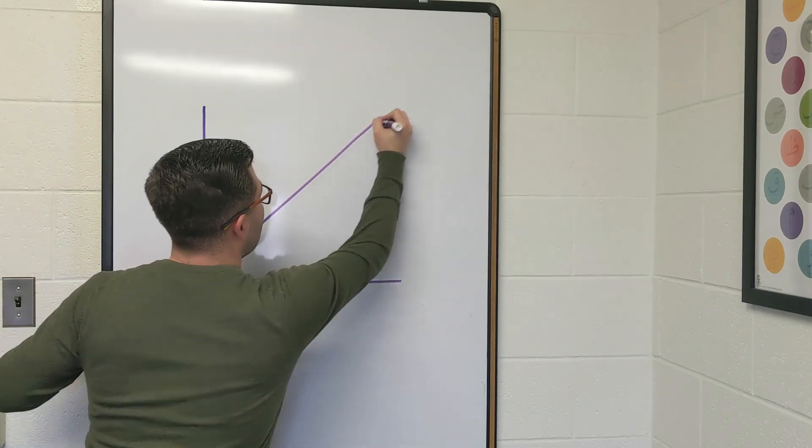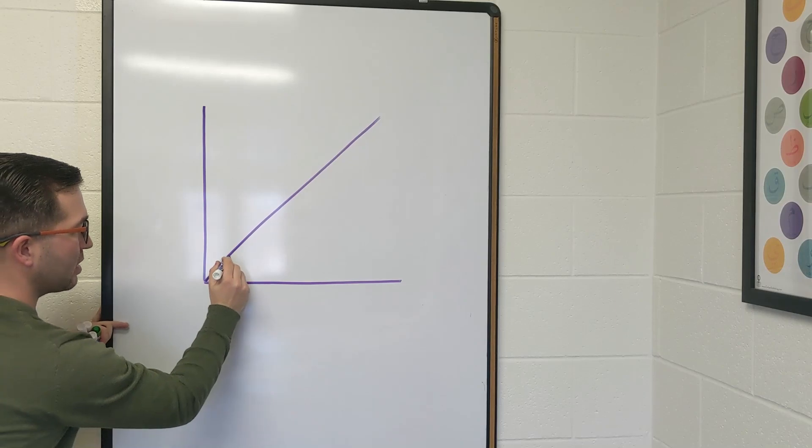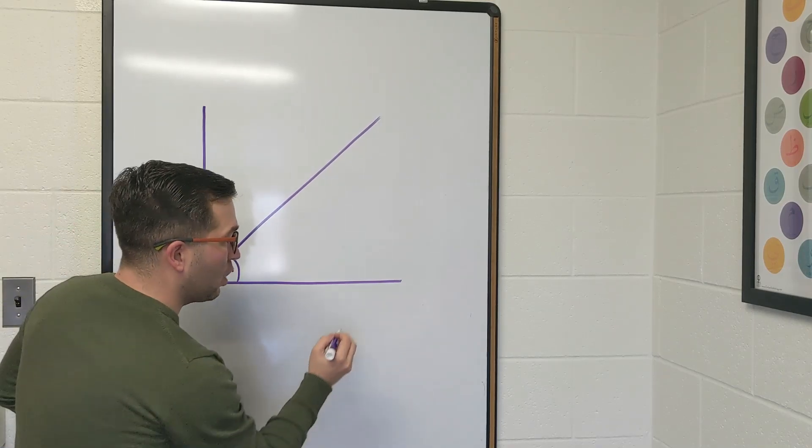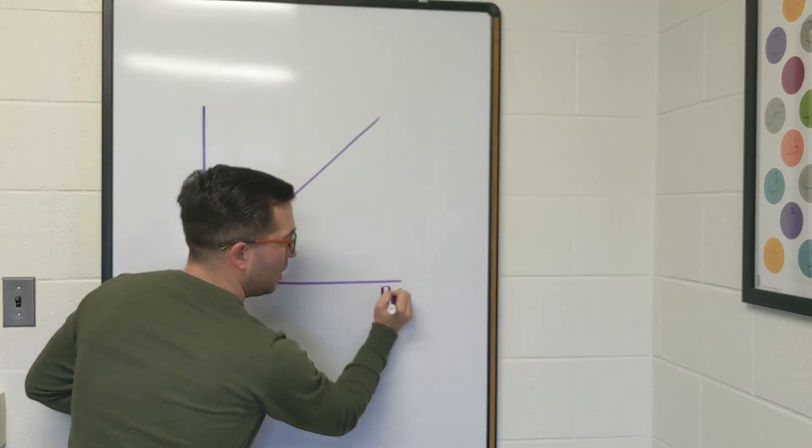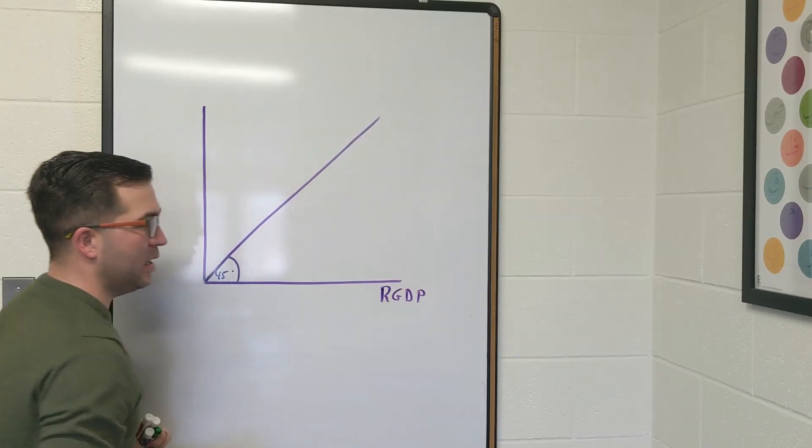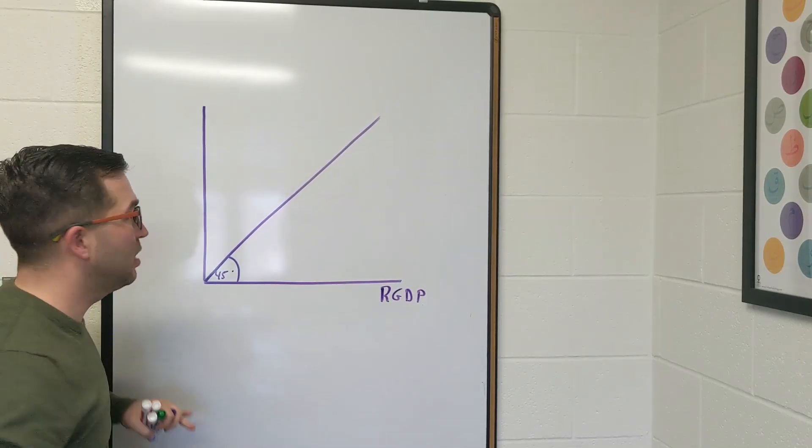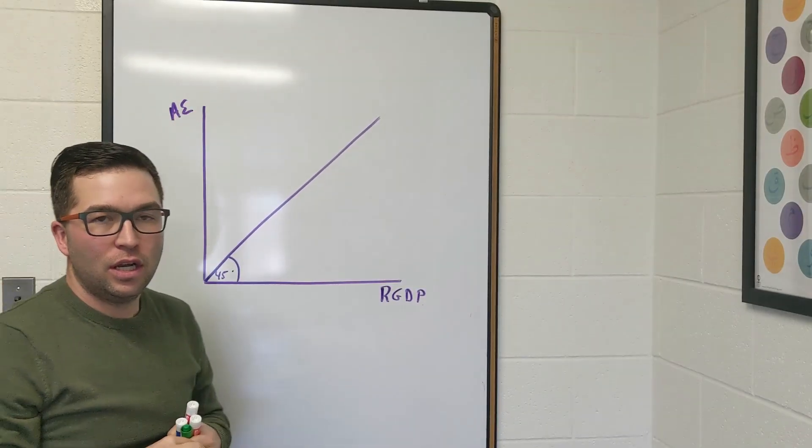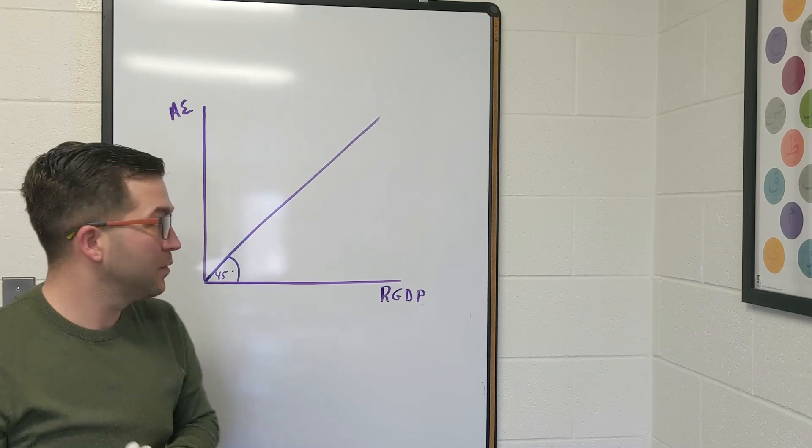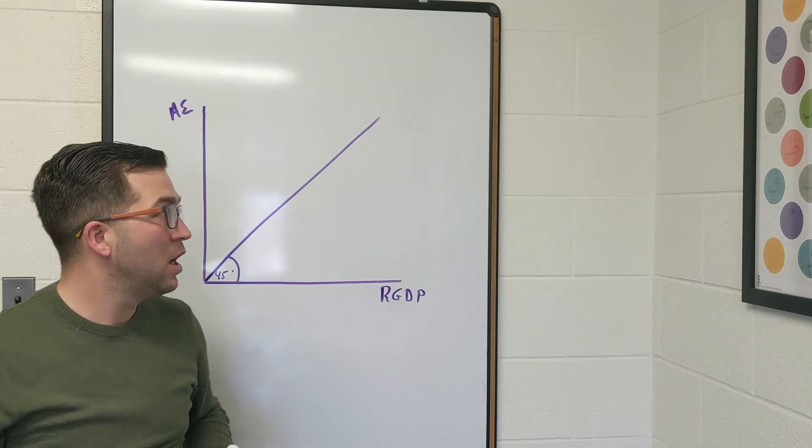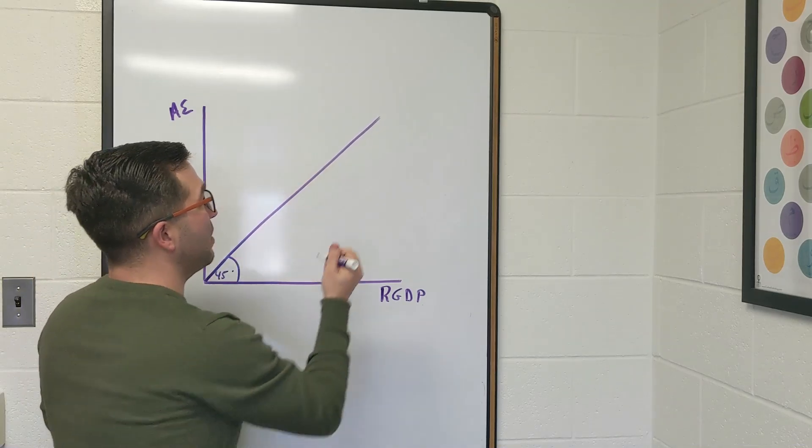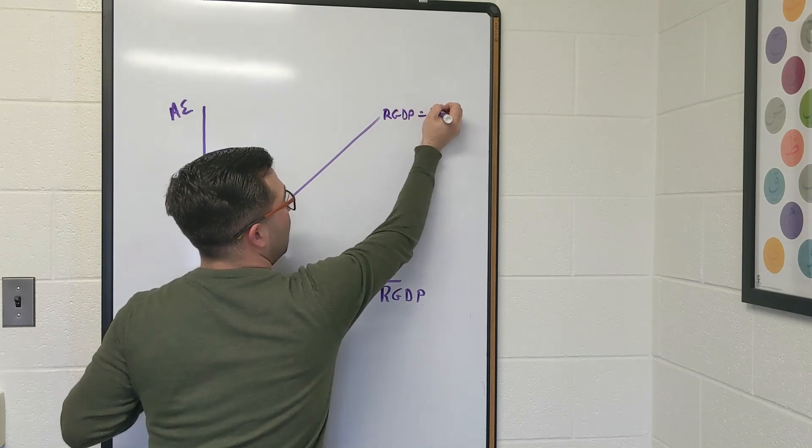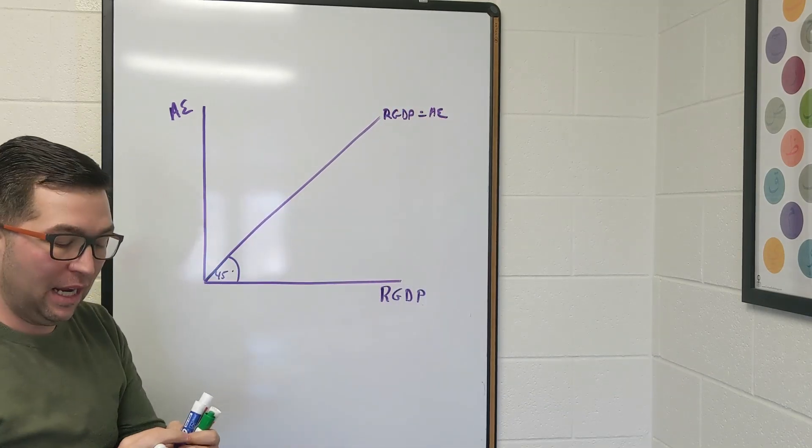So we're going to add this 45-degree line. We're going to graph real GDP on the horizontal axis versus aggregate expenditure on the vertical axis. Remember, anything along this line is where real GDP equals aggregate expenditure, and that's what we're looking at.